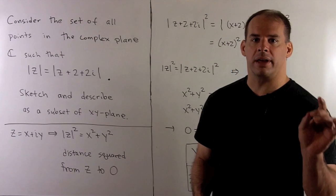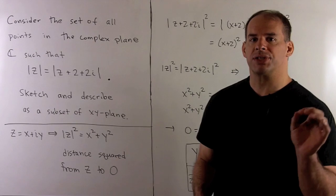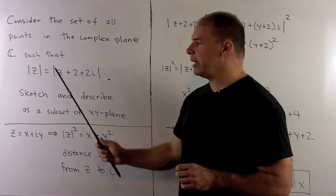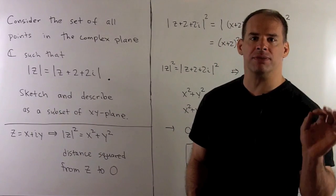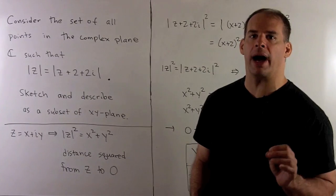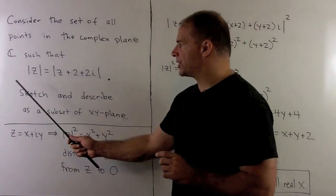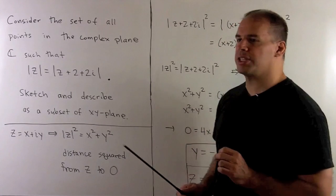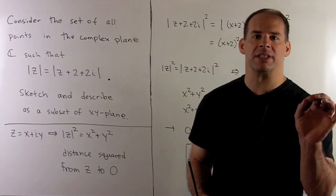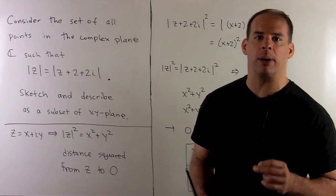Consider the set of all points in the complex plane C such that |z| = |z + 2 + 2i|. Question: We want to sketch the set of all these points and describe it explicitly as a subset of the xy-plane.